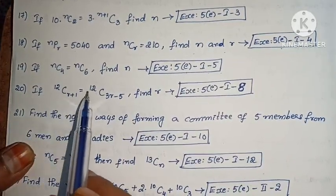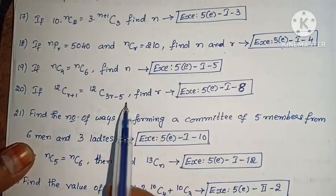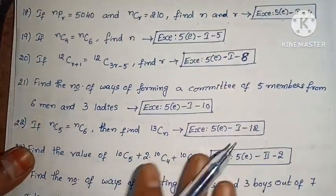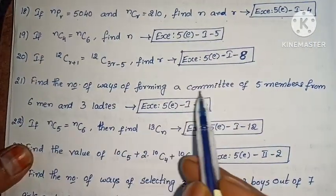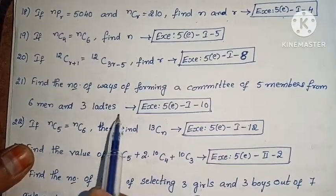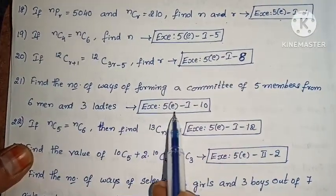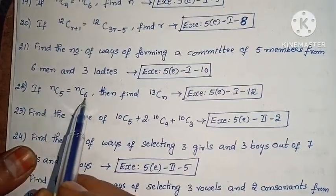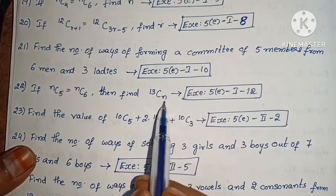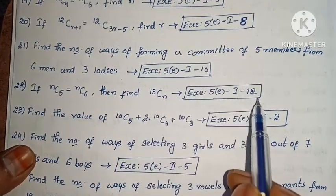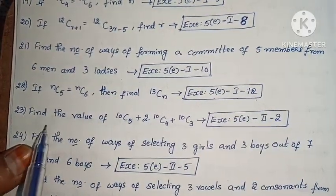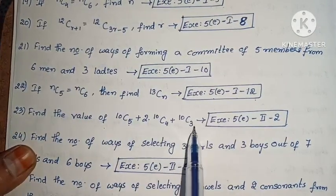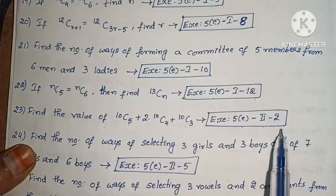Next: if 12C(r+1) equals 12C(3r minus 5), find r (Exercise 5, Roman I, eighth one). Next: find the number of ways of forming a committee of 5 members from 6 men and 3 ladies (Exercise 5, Roman I, tenth one). Next: if nC5 equals nC6, find 13Cn (Exercise 5, Roman I, twelfth one). Next: find the value of 10C5 plus 2 into 10C4 plus 10C3 (Exercise 5, Roman II, second one).